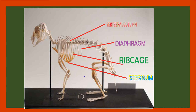Now look at the skeletal system of the rabbit. Observe the thoracic cavity. It is bound dorsally by the vertebral column, ventrally by the sternum, and laterally by the ribcage. Down the thoracic cavity is a dome-shaped diaphragm. Inside the thoracic cavity lies the lungs — this is the location of the lungs.